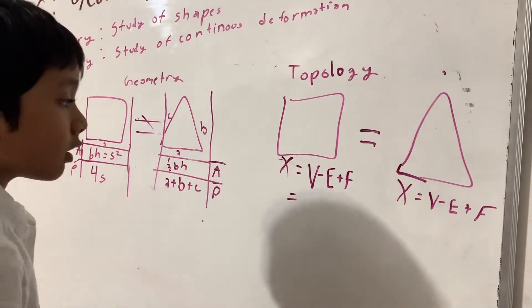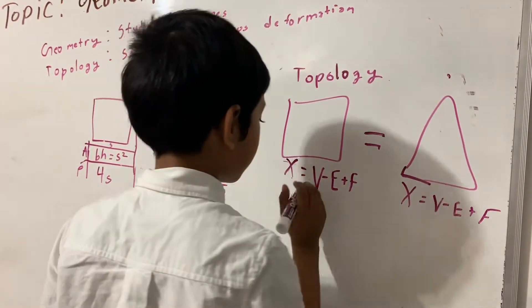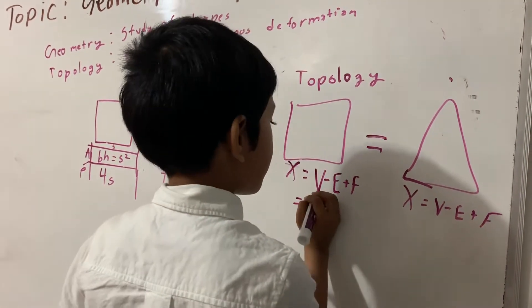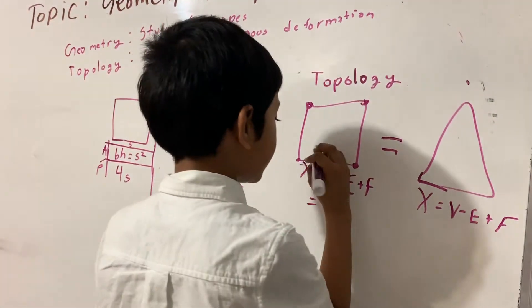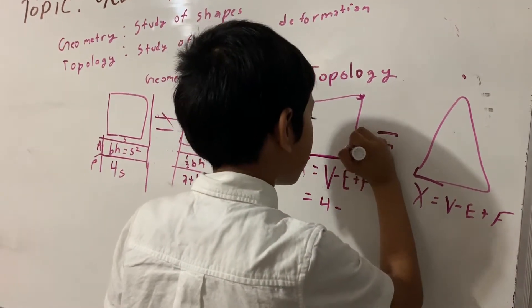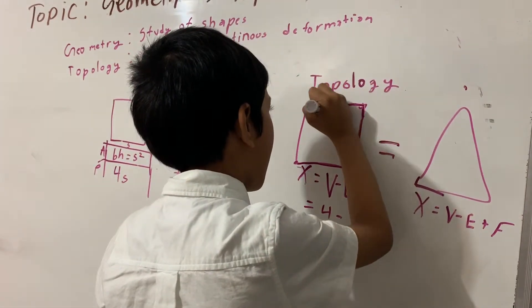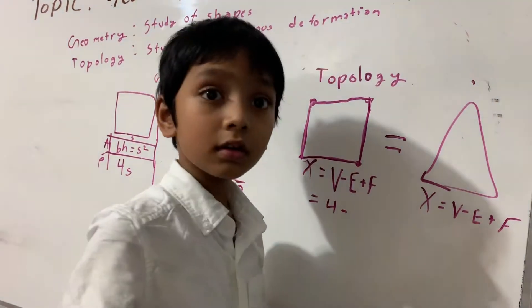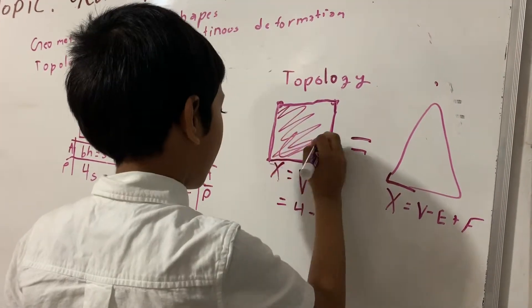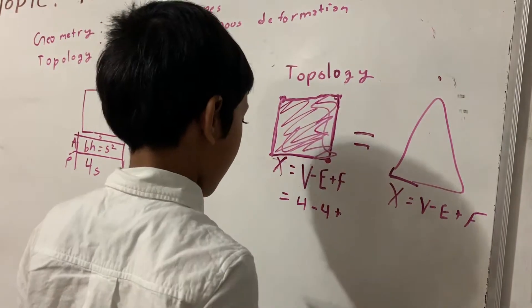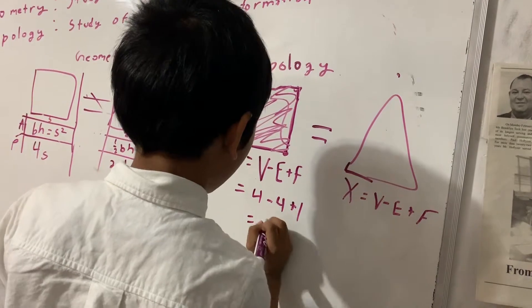Now, let's go with the Euler characteristics for a square. To make it simpler, the square has one, two, three, four vertices, four edges or sides, plus one face, so chi equals one.